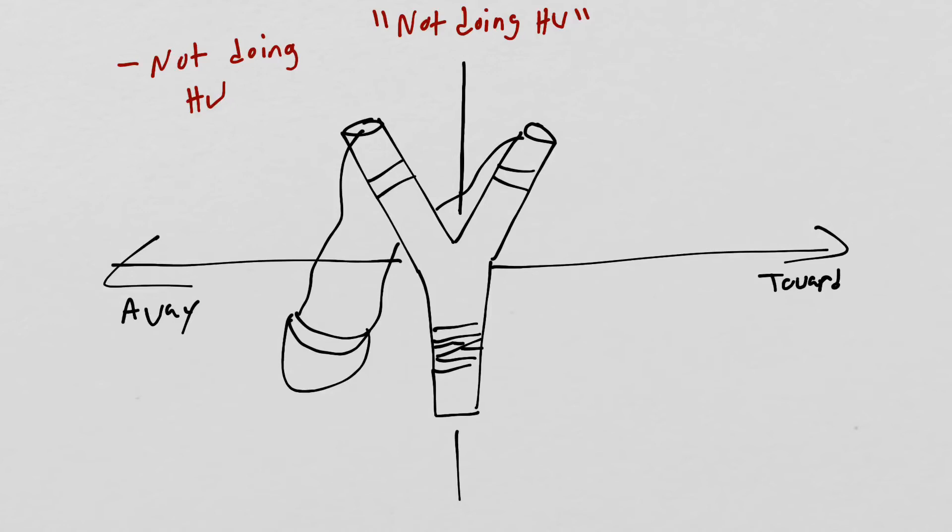We then move downward, to the bottom left, and probe for inner content that shows up around doing homework. We can ask questions like, when you think about or try to do the homework, what kinds of thoughts or feelings show up?